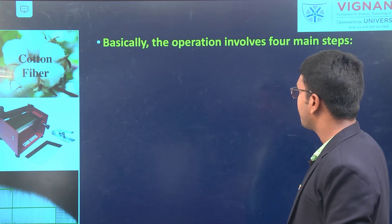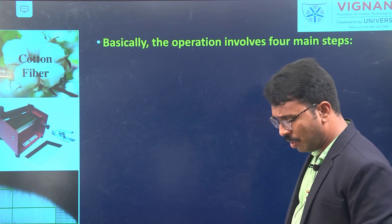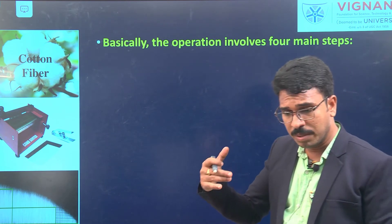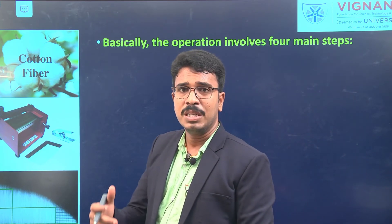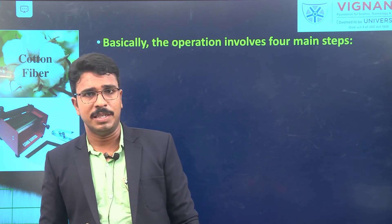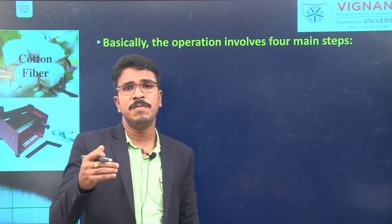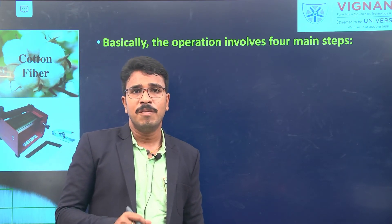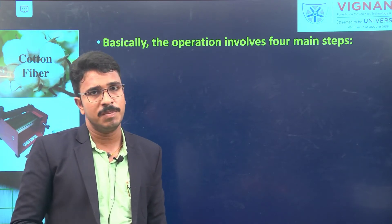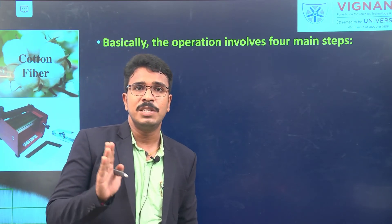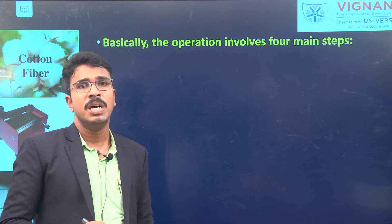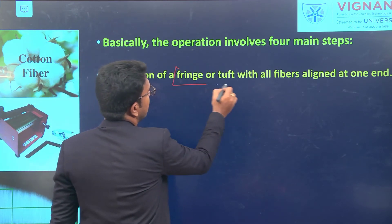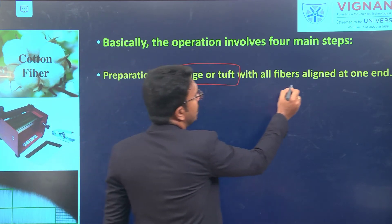Whatever fiber sorter method is used, it mainly consists of four steps. The first step is preparation of a fringe or tuft with all fibers aligned at one end. We take a representative sample by random sampling and then prepare the tuft with all fibers aligned at one end — this is the first and essential requirement.